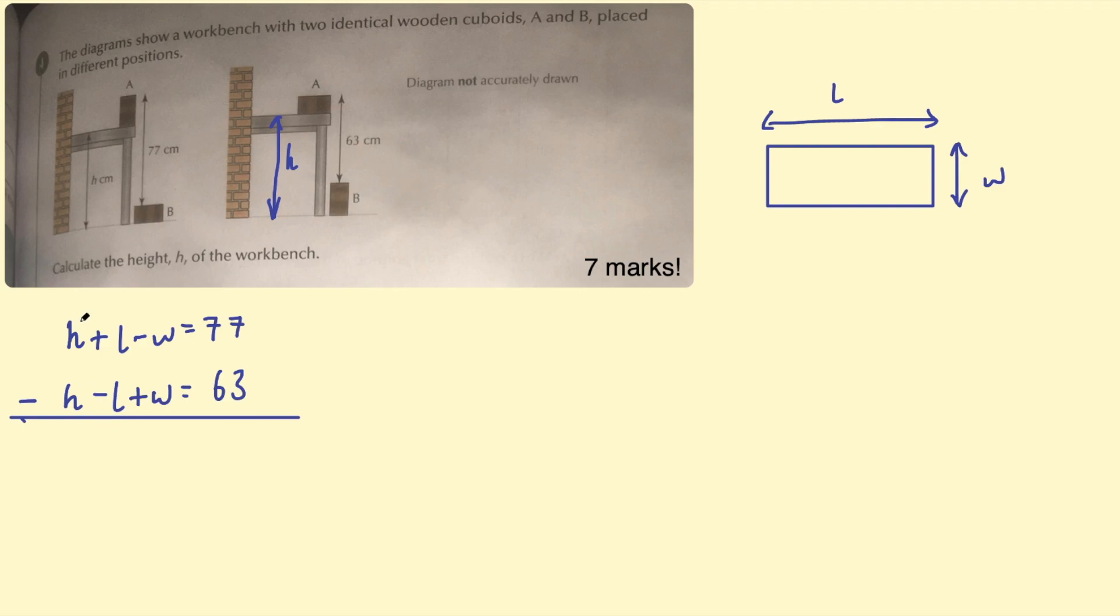All right. So now we're subtracting the equations. H take H, that's zero. They eliminate each other. That's the whole point. Positive L, subtract negative L. That's L plus L. Two negatives make a positive. So we'll have two L here. And then negative W take positive W. That's negative W take W. That's negative two W. And then we have 77 subtract 63. The difference there is 14.